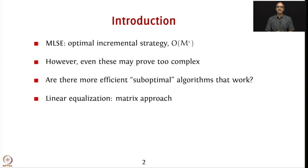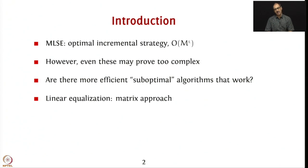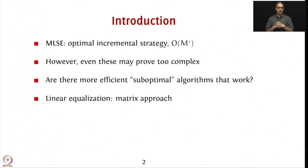But sometimes even these may prove too complex. Practically, the Viterbi algorithm requires you to maintain memory, and you have to have many surviving paths — all those kinds of issues start arising. So sometimes you may want to do something simpler, or let's say you have a reasonably high SNR and don't really want to worry about these complex algorithms. The question is: are there more efficient, meaning lower complexity, suboptimal algorithms that will help our cause, so we don't have to spend all our efforts implementing something more complicated?